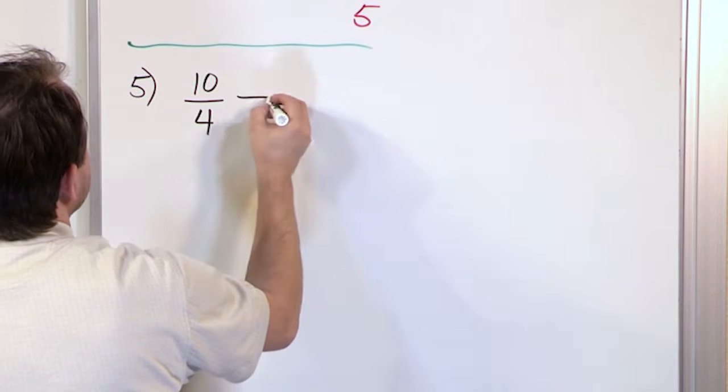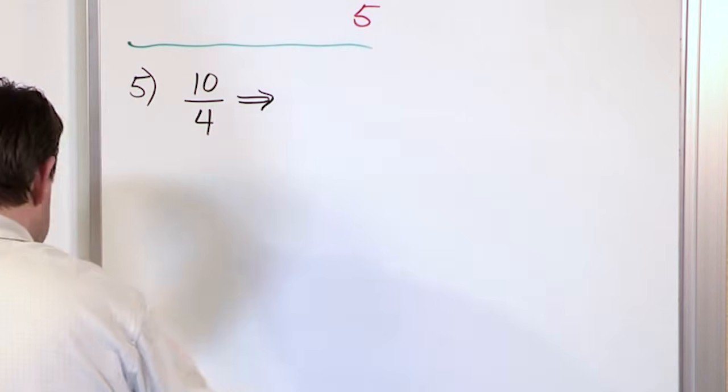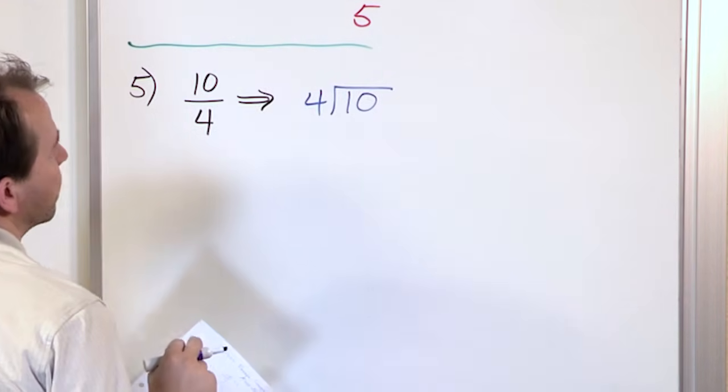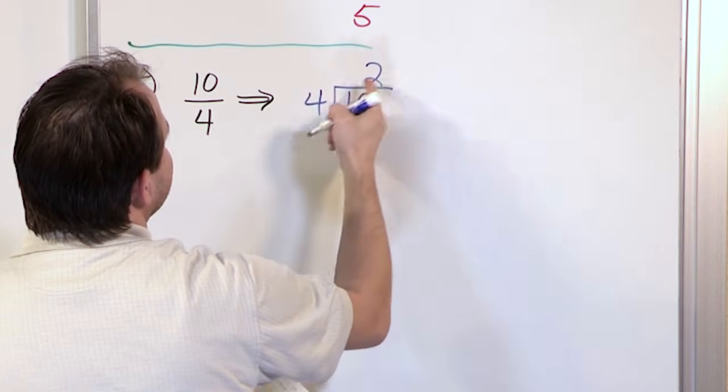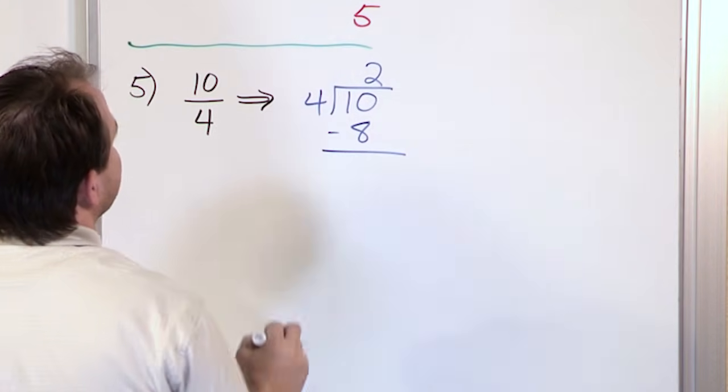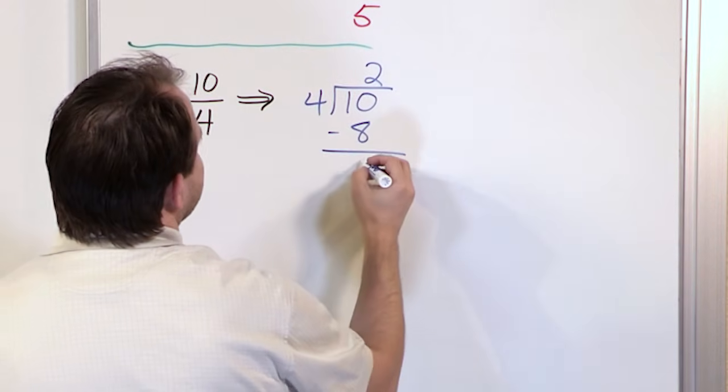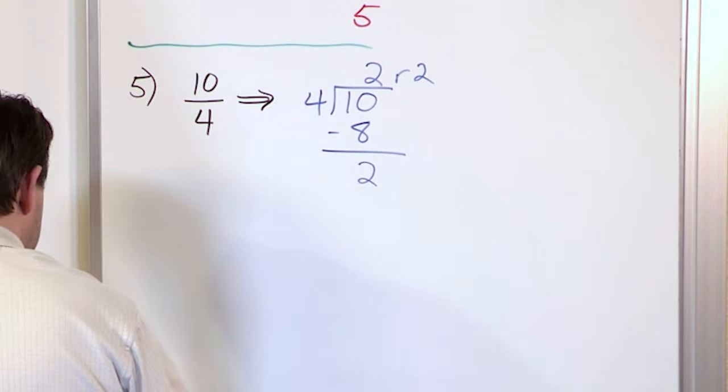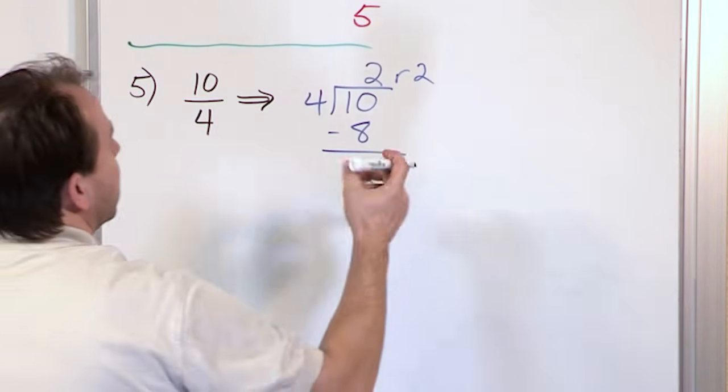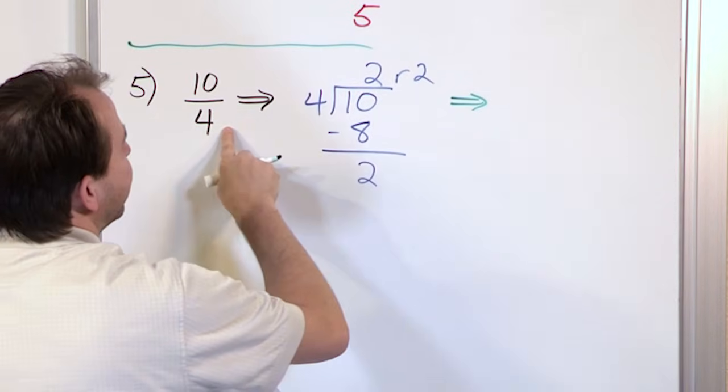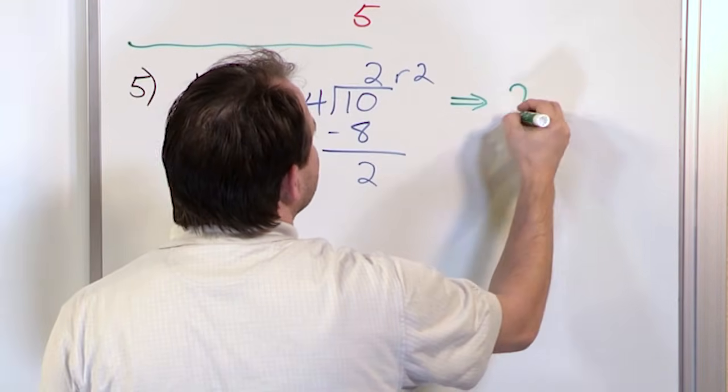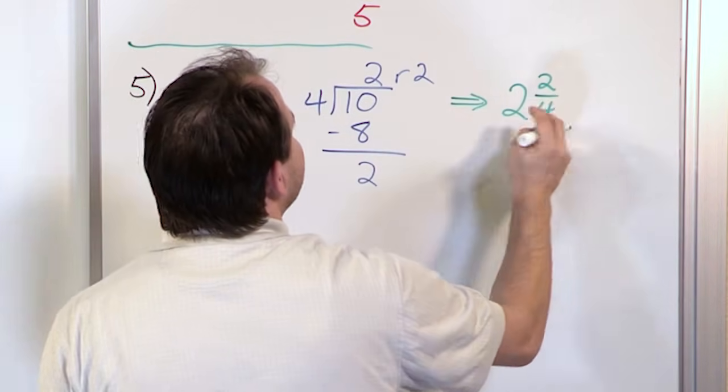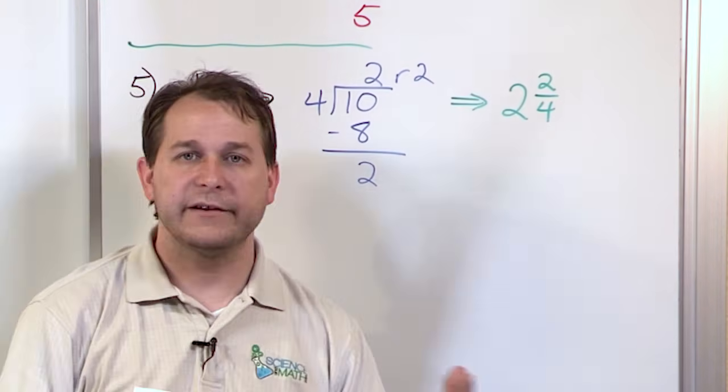Let's do 10 fourths. This is an interesting one. We'll take 10 and divide 4 into it. It'll go 2 times because 2 times 4 is 8. We'll do this subtraction and get 2. 10 minus 8 is 2, so the remainder is 2. When we take 10 and divide it by 4, we get it to go 2 whole times with a remainder of 2 over our original denominator. So 2 and 2 fourths is actually the right answer.